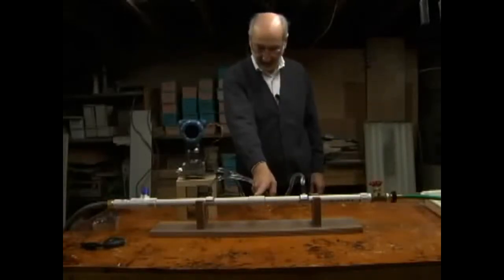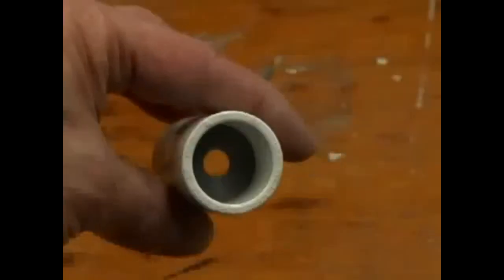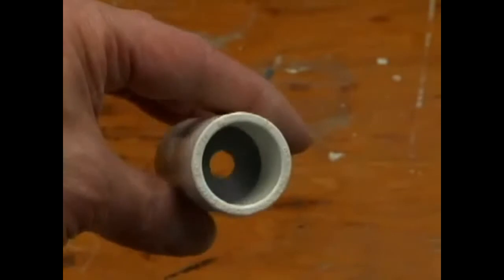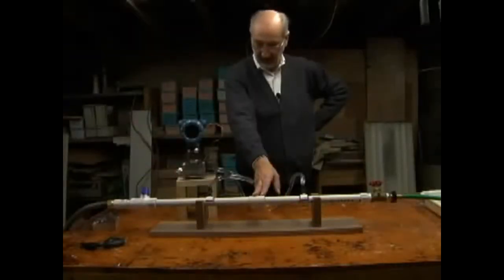Inside the coupling is a small disk with a hole in it that's only 3 eighths of an inch in diameter, which is considerably smaller than the inside diameter of the pipe. So what we have done in effect is created an obstruction in the pipe which restricts the flow to some extent but does not stop it entirely.